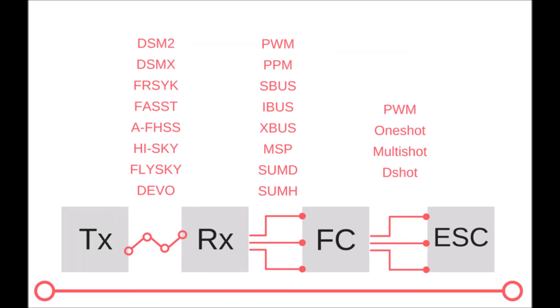The FlySky FSI-A6B receiver has three types of communication protocols: the classic PWM, and two serial protocols, PPM and IBIS. When this receiver is connected to a flight controller, one of the two serial connections is always used.